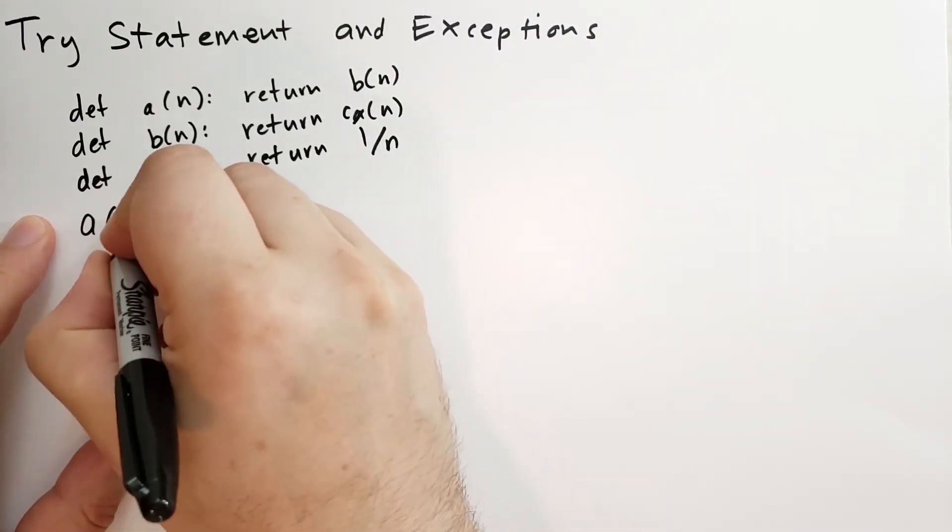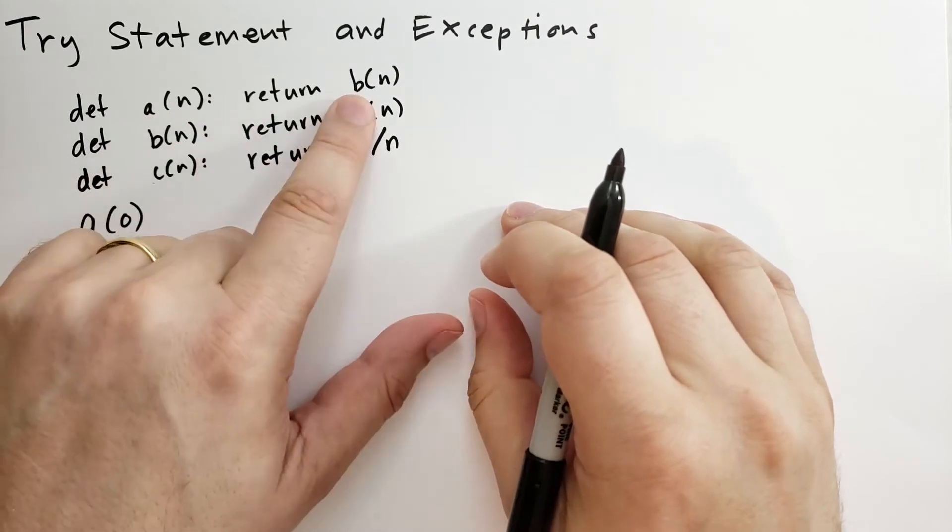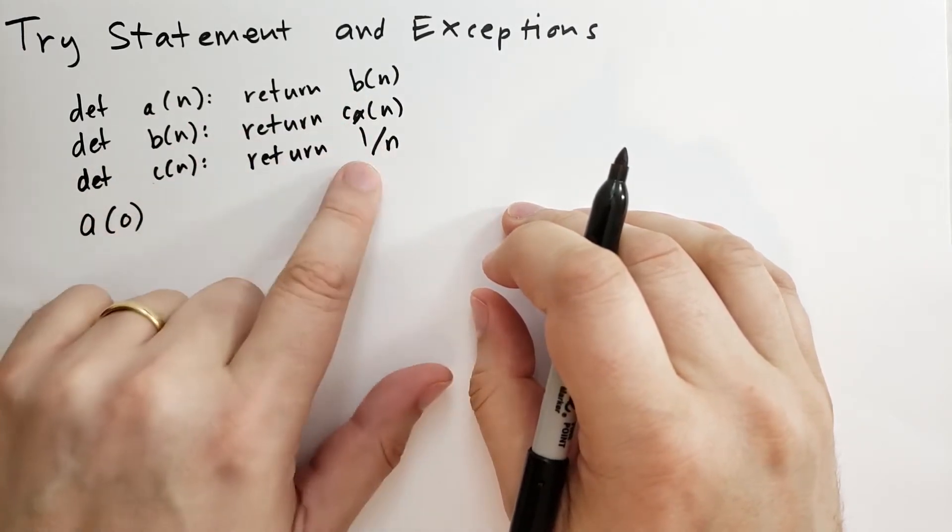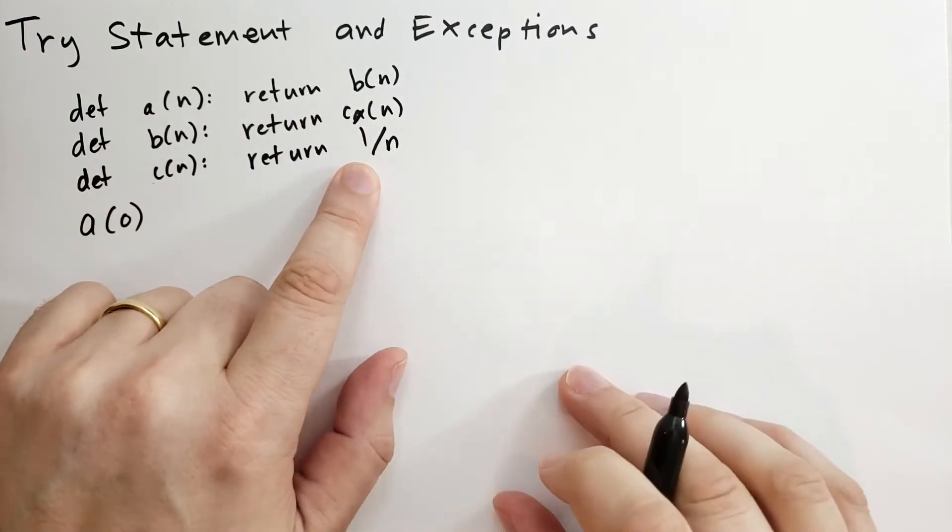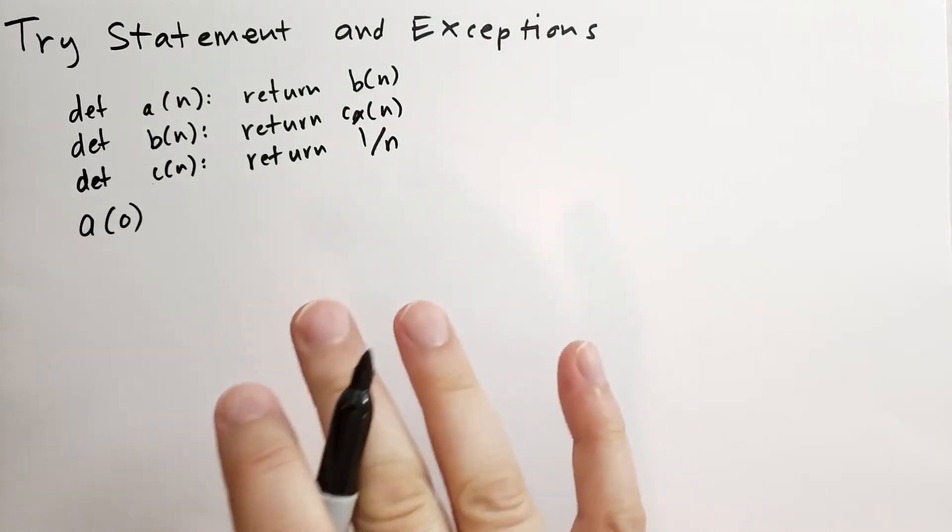What if I were to call it with a of 0? Well, a would call b, b would call c, and then c would have a zero division error. The call stack tells us which functions are calling which and where to go after we return.